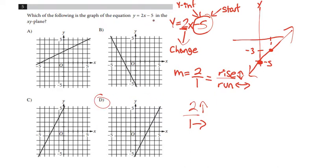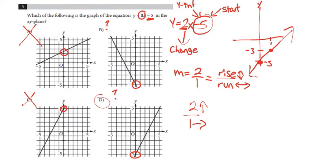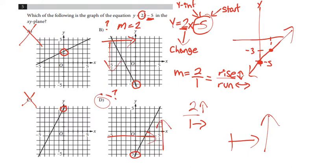Another way: first check the y-intercept. It's negative 5. A has a positive y-intercept — cannot be A. B has a y-intercept of negative 5, so maybe B. C has a positive 5 y-intercept — cannot be C. D has a y-intercept of negative 5, so maybe D. Next, check slope: is it positive or negative? Our slope is positive 2, meaning from left to right we need to be increasing. B goes down from left to right. D goes up. Therefore the answer is D.